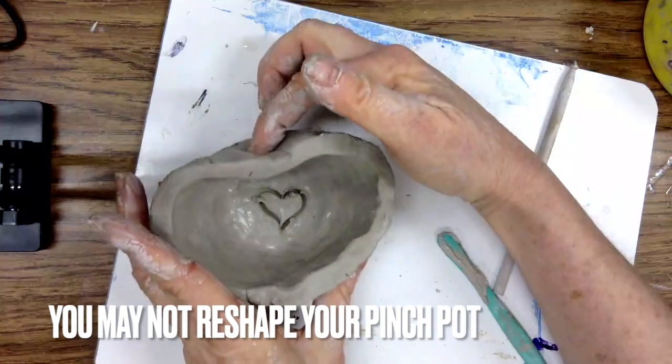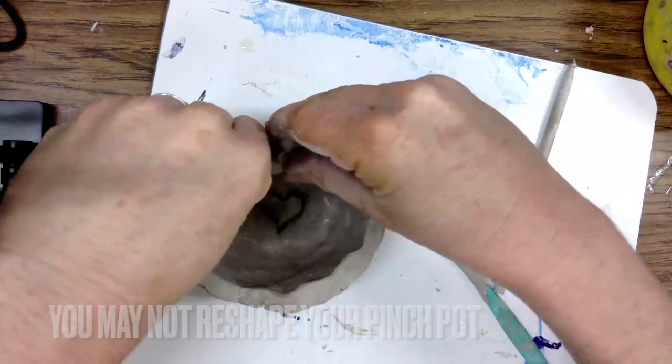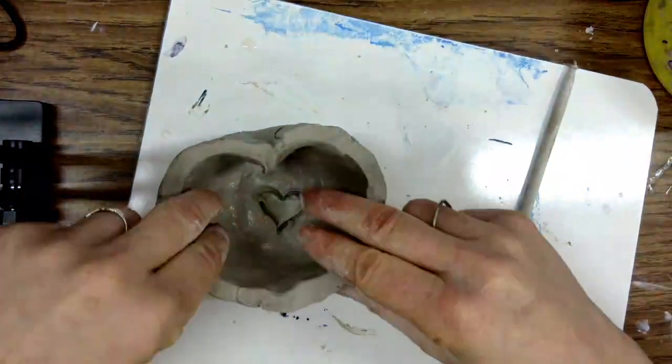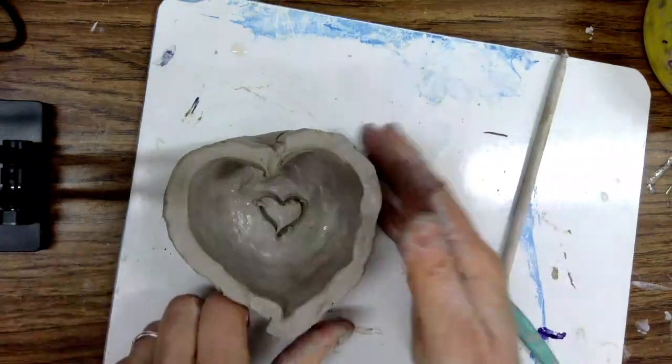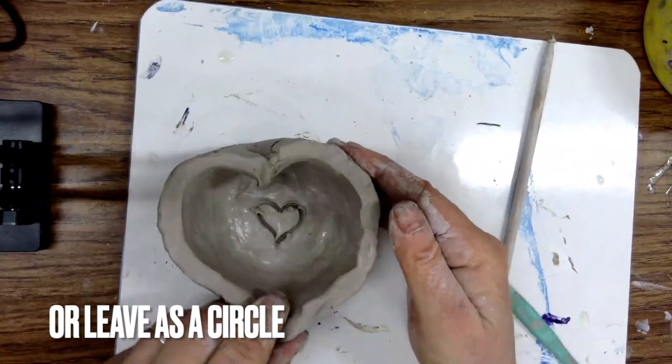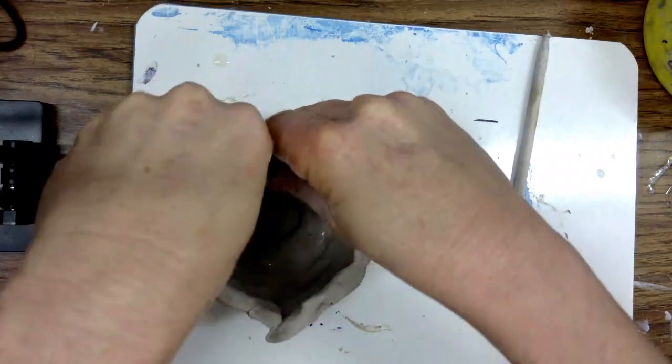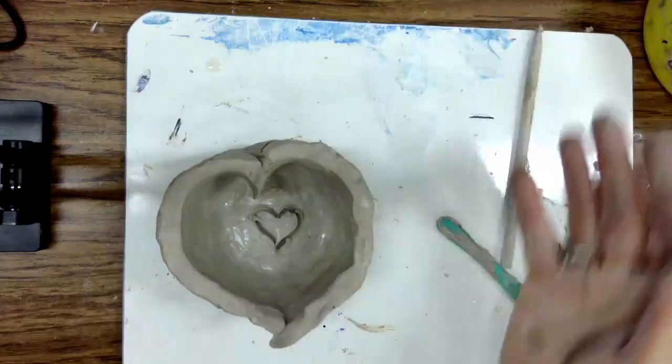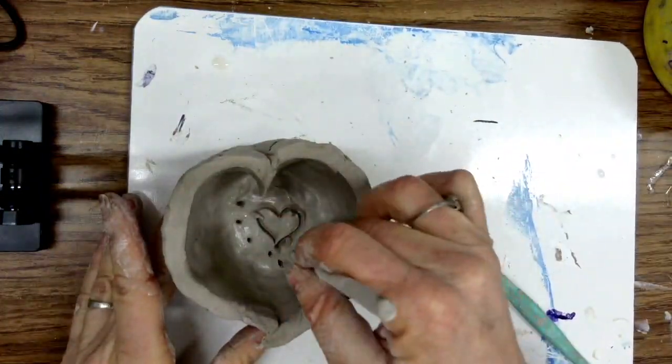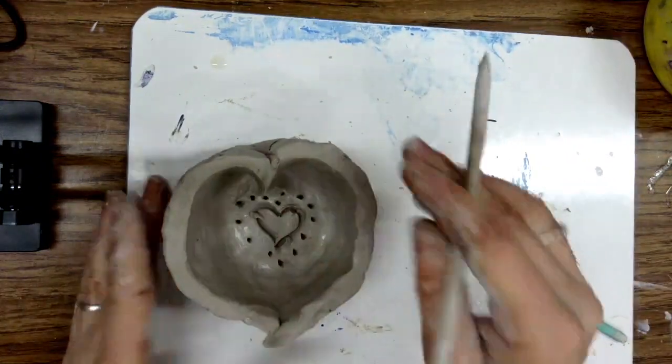You can leave your pinch pot as a circle shape, or you can change the shape by pressing and pinching in different parts of the clay. This one is heart-shaped. If you have time, you can do that now or leave it as a circle.